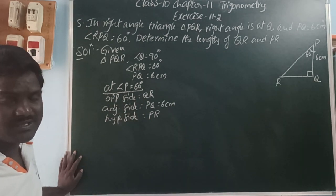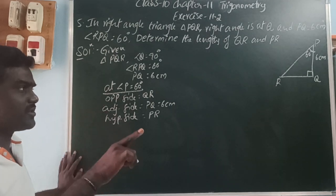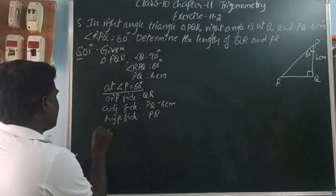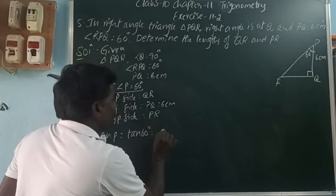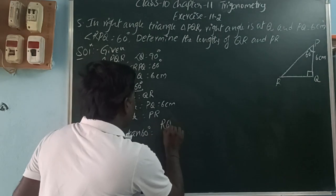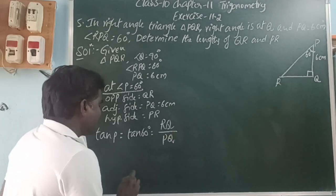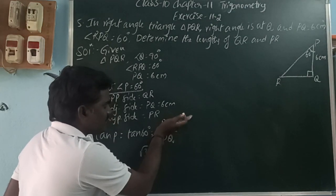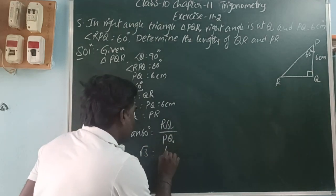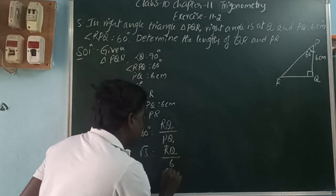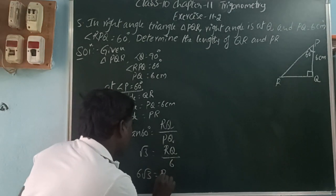The tan ratio is opposite side to adjacent side. So tan P equals RQ by PQ. tan60 equals root 3. Therefore root 3 equals RQ by 6. Bringing 6 to the other side by multiplying: 6 root 3 is equal to RQ. So RQ length is 6 root 3 centimeters.